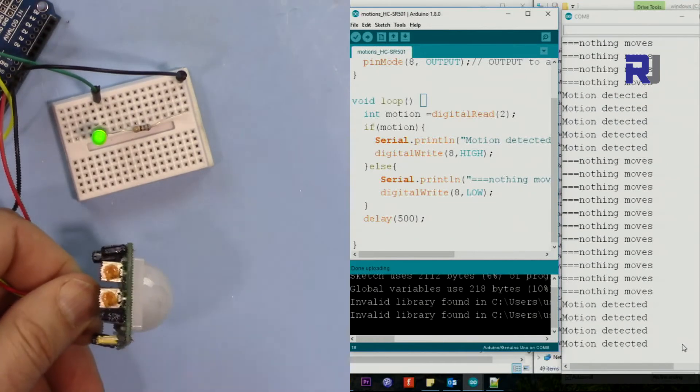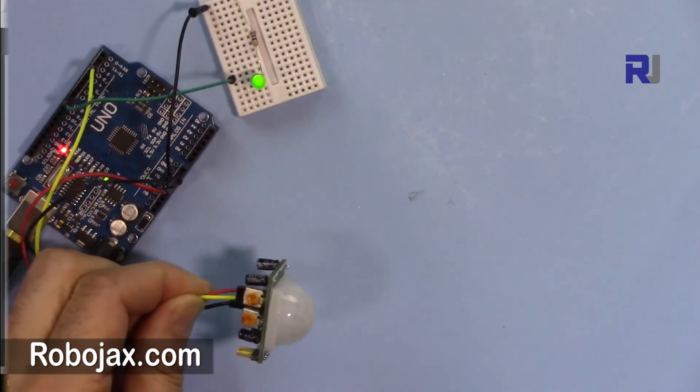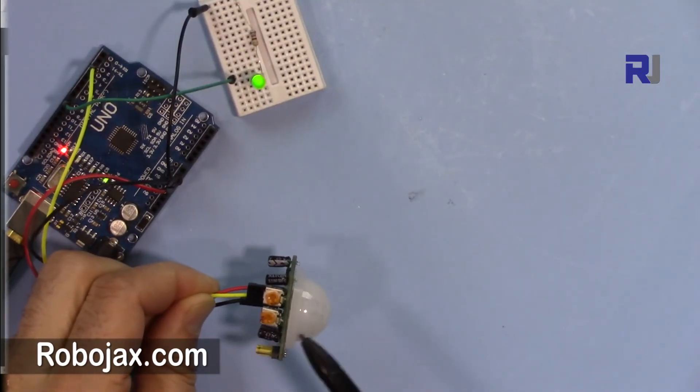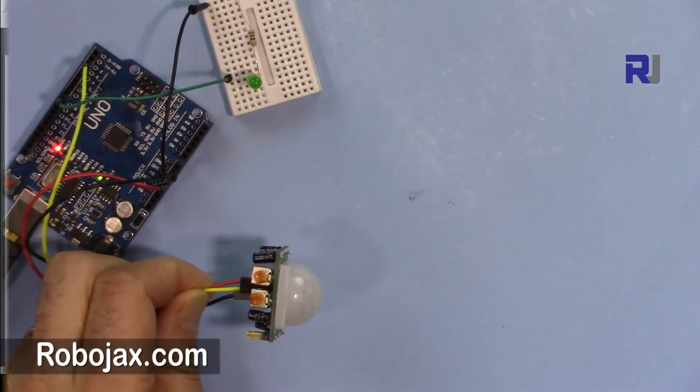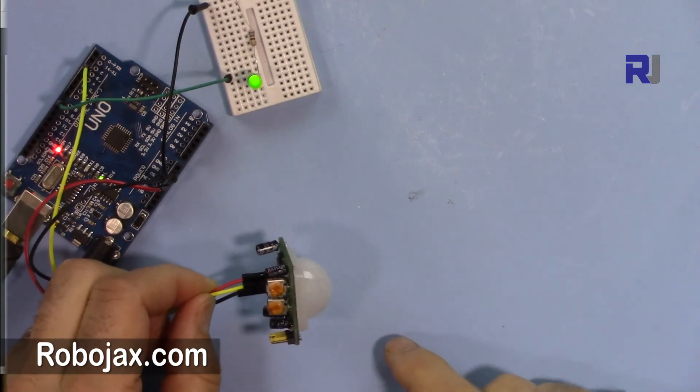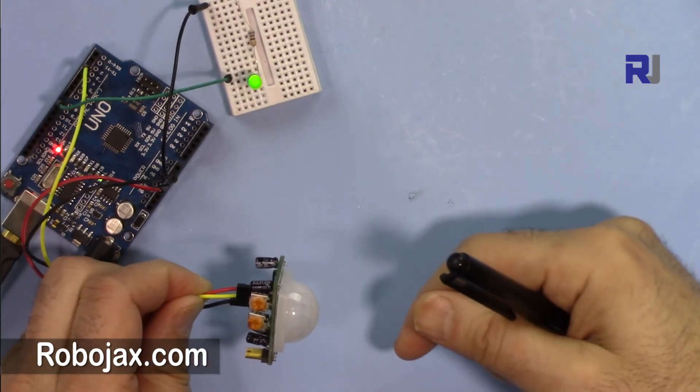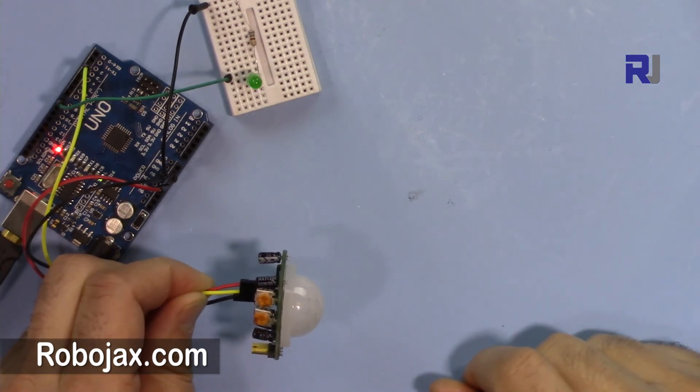This was an introduction to HCSR501 motion sensor. Thank you for watching. Please thumb up the video and also please share it and subscribe to get updates. All the code will be provided by clicking the description. You can get it or you can go directly to robojax.com/learn/arduino.